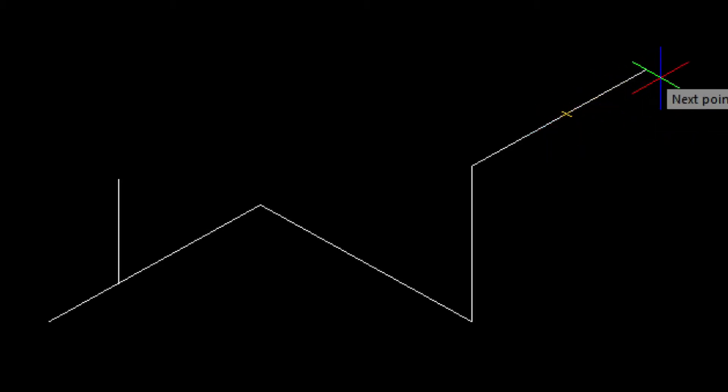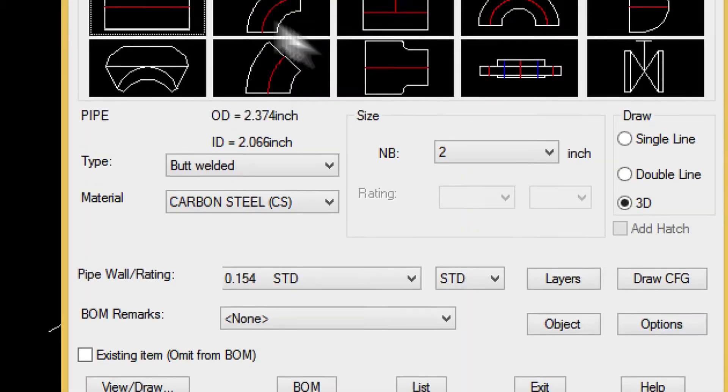In just a minute, I'll be snapping over these lines and creating my pipe spool. So now, let's load the piping routine by selecting the piping icon in our toolbar. Here, you'll see several different specs and options.